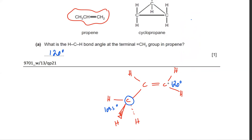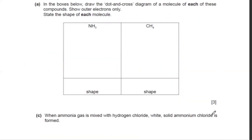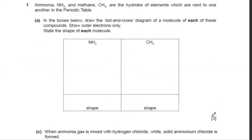Remember: when carbon makes a double bond, treat the double bond as one entity. Whenever you have three pairs of bonds around a central atom, the angles will be 120 degrees — fan-shaped, as far apart from each other as possible.